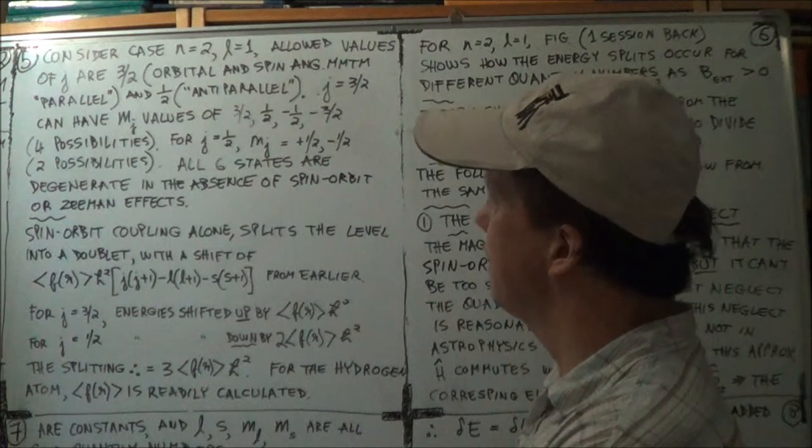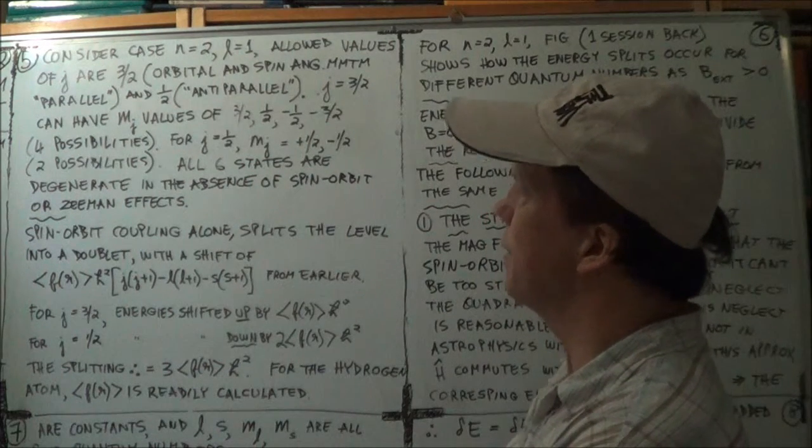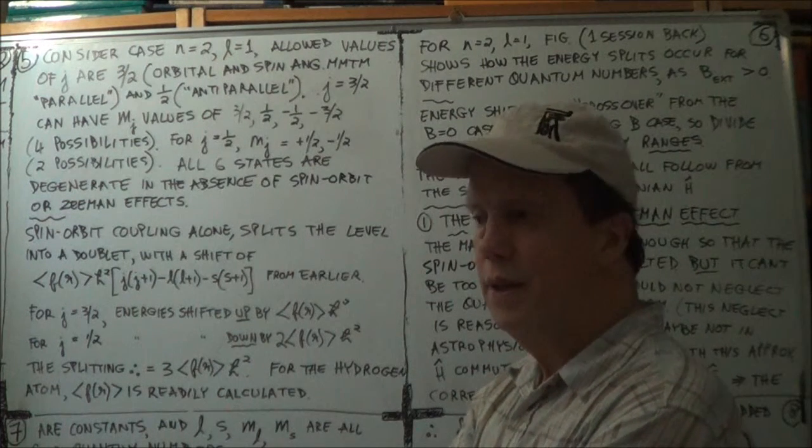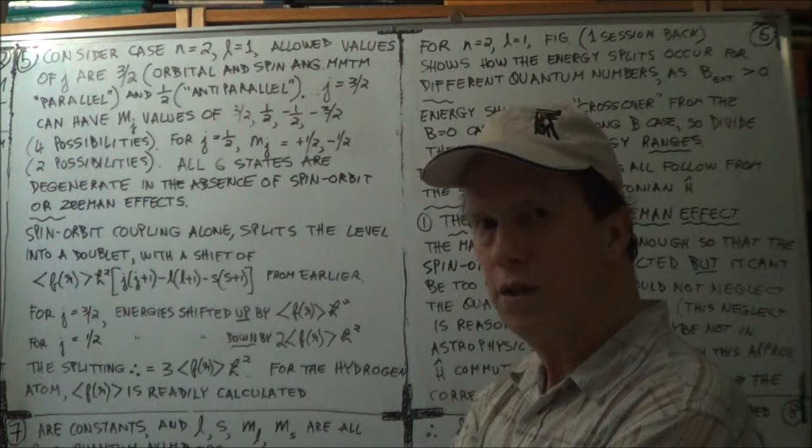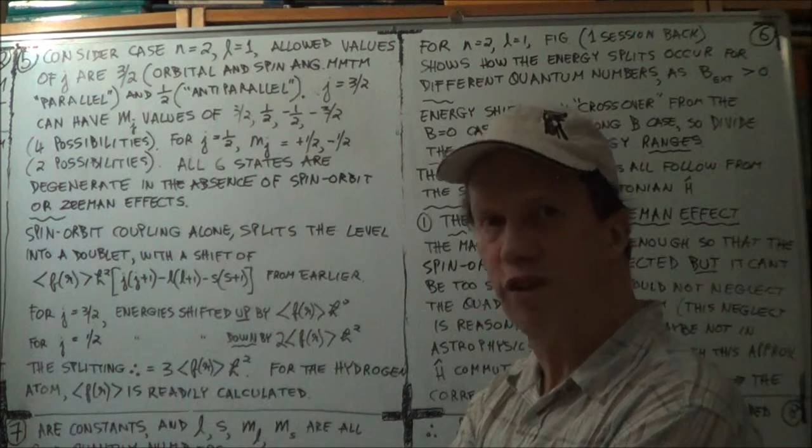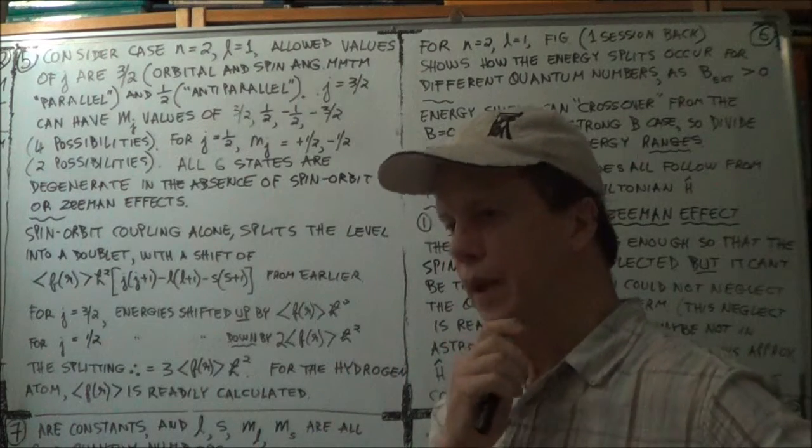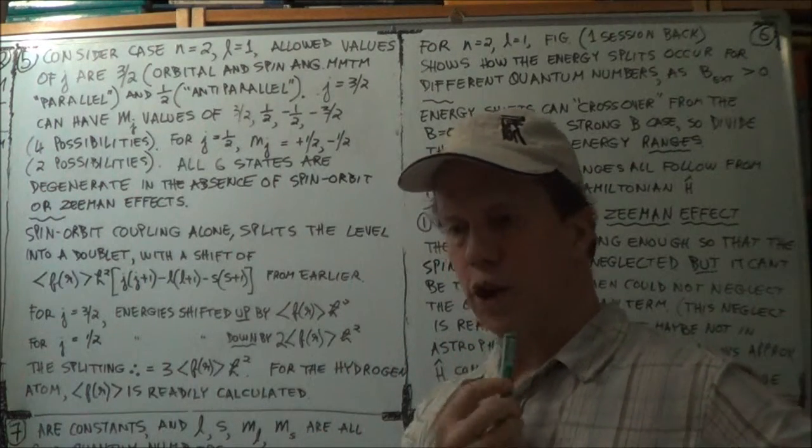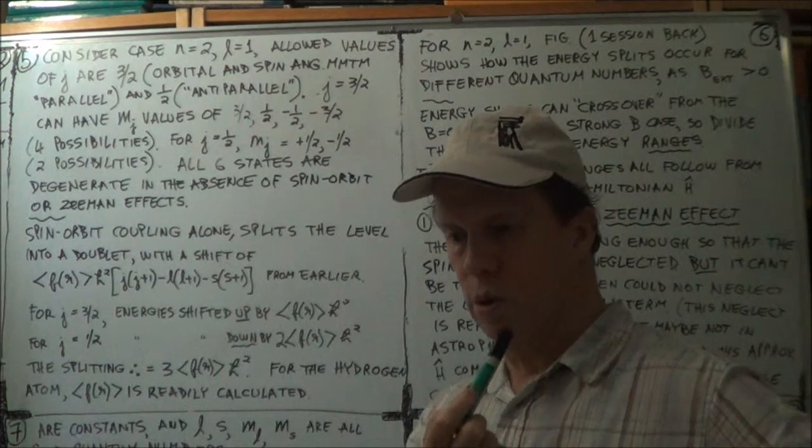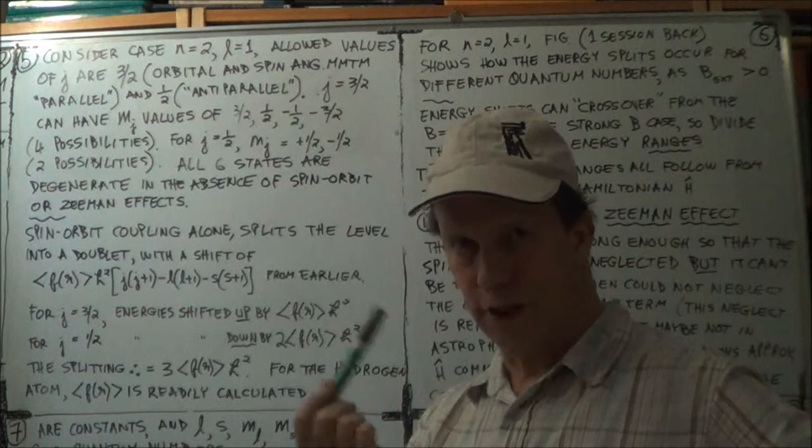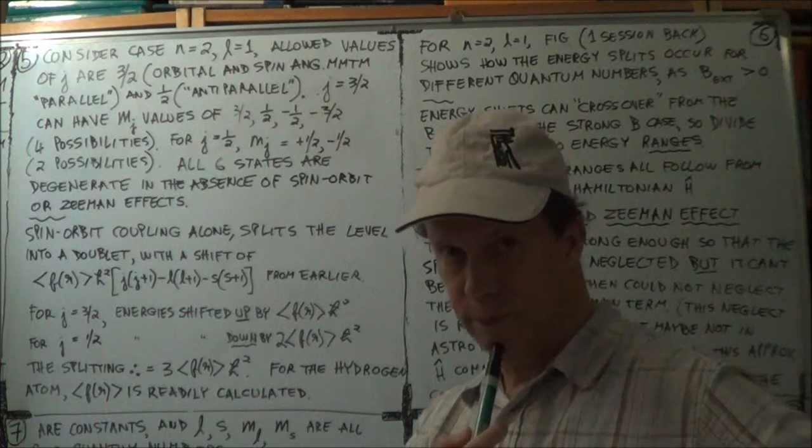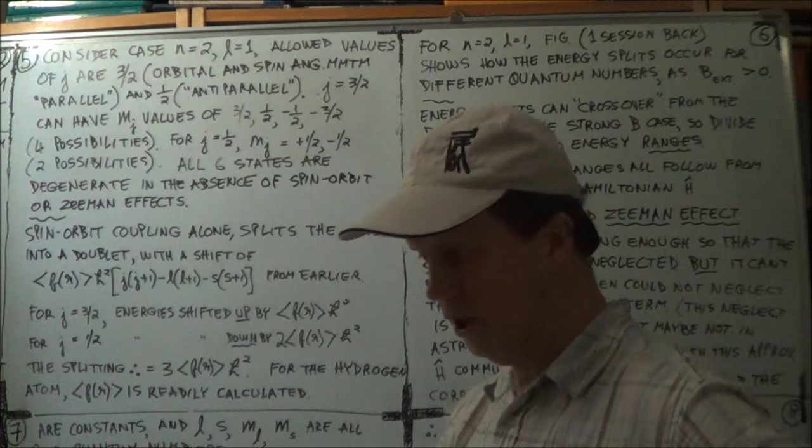So the eigenstates corresponding to those six cases, when the magnetic field gets switched off, those eigenstates are six-fold degenerate. Remember degeneracy, what does that mean? Degeneracy occurs when you have two or more eigenstates, eigenfunctions, that have the same eigenvalue. That's the definition of degeneracy.